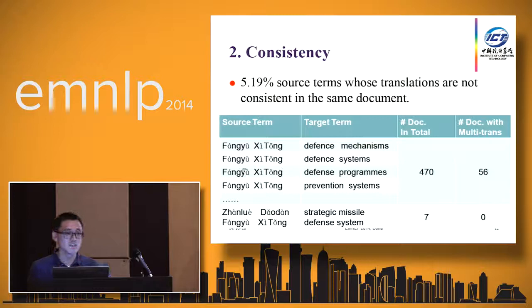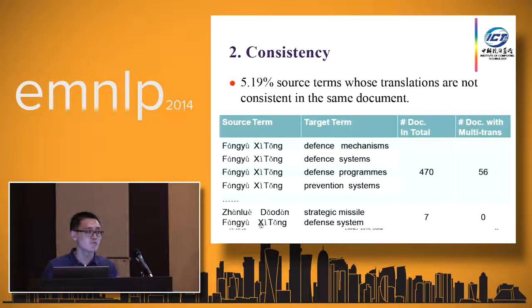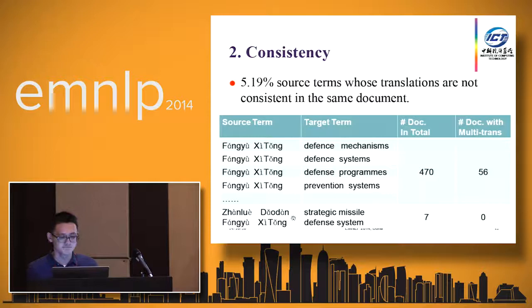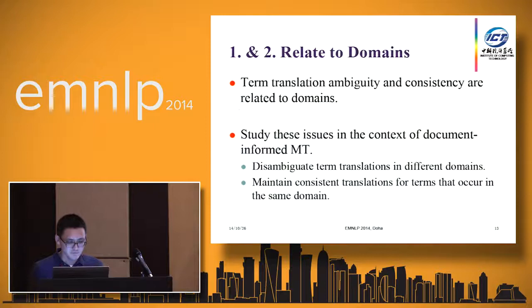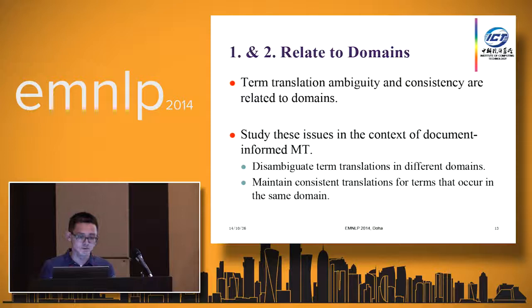In 414 documents, the source Chinese term has only one single translation, while in the other 56 documents the term can be translated into multiple translations. So it is not consistently translated in those 56 documents. However, in the last row, we see that the source term is translated with only one single translation in all seven documents where it occurred. Actually, about 5% of source terms have translations that are not consistent within the same document. So term translation ambiguity and consistency are related to domains, and we study these issues in the context of domain-aware machine translation. We want to disambiguate translations in different domains and maintain consistent translations for terms that occur in the same domain.